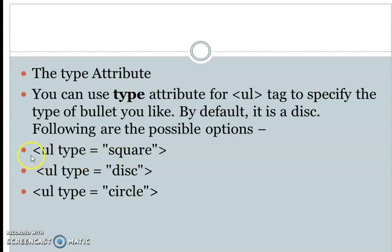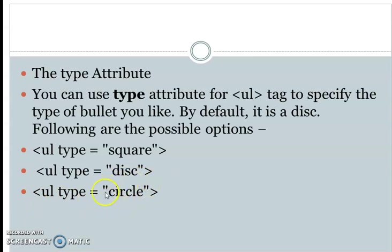For the unordered list type attribute: by default, you have a disk — a bullet in black color. You can change to a square shape in black color, or a disk type which gives a filled circle, or a circle type which gives a hollow circle in black color. These are the type attributes available.